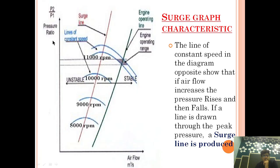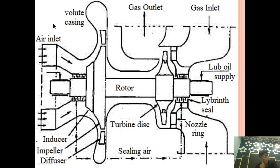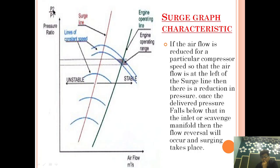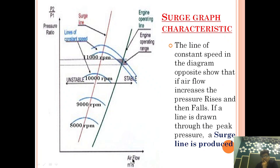First let's see what the axes are. On the y-axis we have pressure ratio P2 by P1, and on the x-axis we have airflow in meters per second. This pressure ratio P2 by P1 means: suppose air is entering at 1 bar and going out after passing through the diffuser and volute casing at 4 bar. The ratio of 4 by 1 is the pressure ratio. Now this is the airflow.